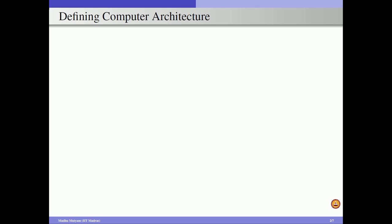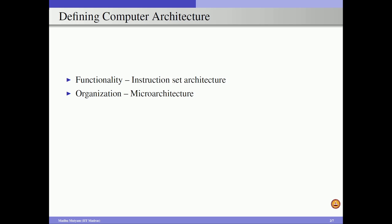Because our course is on computer architecture, we mainly focus on two layers: the architectural layer and the microarchitecture layer. Computer Architecture defines mainly the functional requirements of a computer specified by the Instruction Set Architecture, the organization (or microarchitecture) which is the interconnection of functional units to realize the ISA, and finally the efficient implementation. To define efficiency, we first need to see what classes of computers exist, because depending on the class of computer, our efficiency metric can be different.